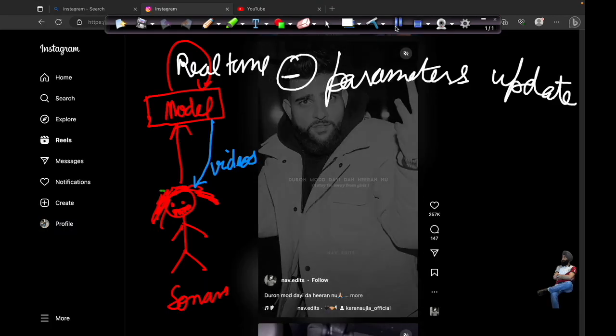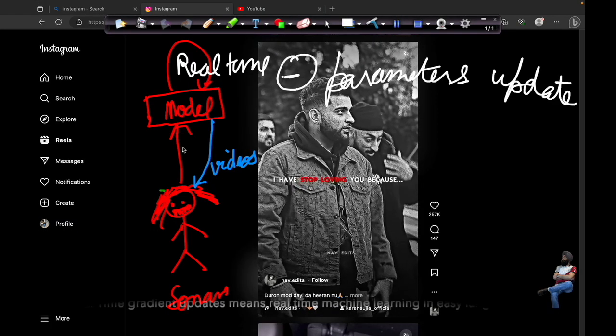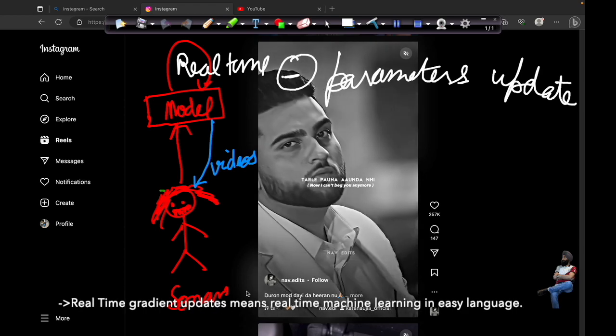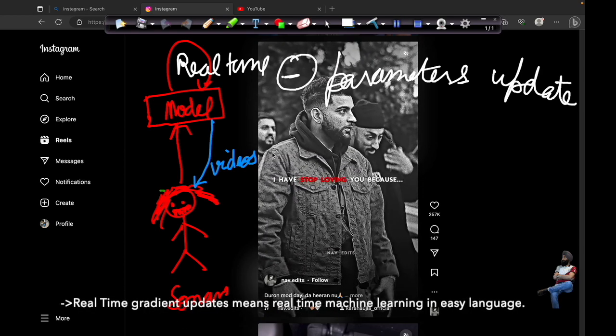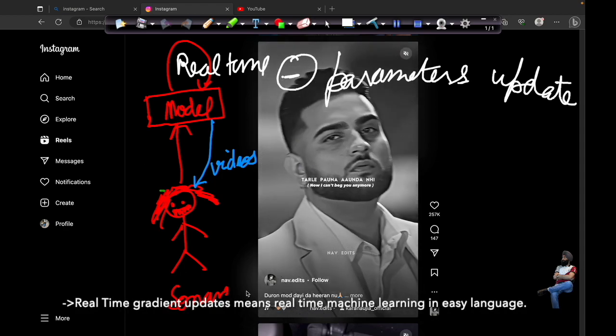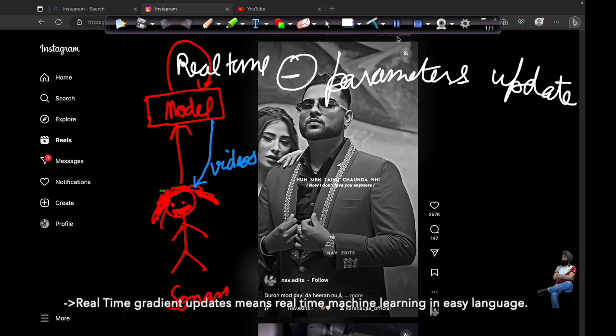Let's suppose Sonam is on TikTok and she is swiping the reels up and up. From the implicit and explicit user interactions, the model is able to capture and perform real-time gradient updates.